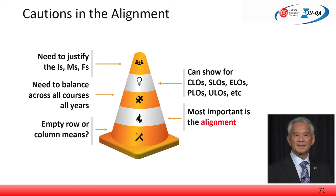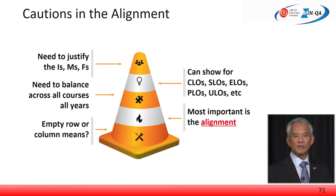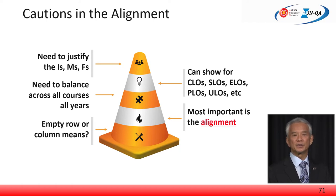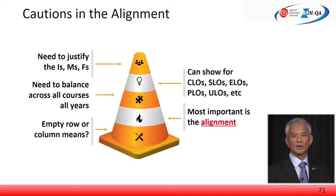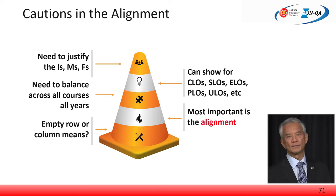There also needs to be balance across all the courses over all the years of study. One would expect the less advanced courses to satisfy the lower-level expected learning outcomes. The map provided will be scrutinised and it has to make sense. Are there any empty rows, empty columns, or so-called blind spots? An empty row would denote a particular course not fulfilling any ELO. An empty column would denote an ELO not fulfilled by any course.